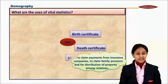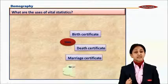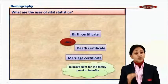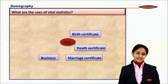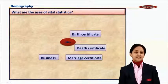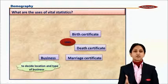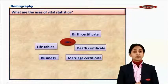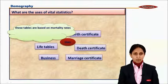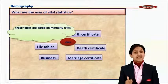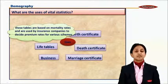Similarly, we can record marriage with the help of a marriage certificate. This certificate also has legal importance — it proves your right to family pension benefits and also your right to job benefits. Apart from these three, vital statistics are used in businesses to decide the nature, type, and location of business. Vital statistics are also used in life tables, which are based on mortality rates — that is, death rates — and are used by insurance companies to decide the premiums of various insurance schemes.